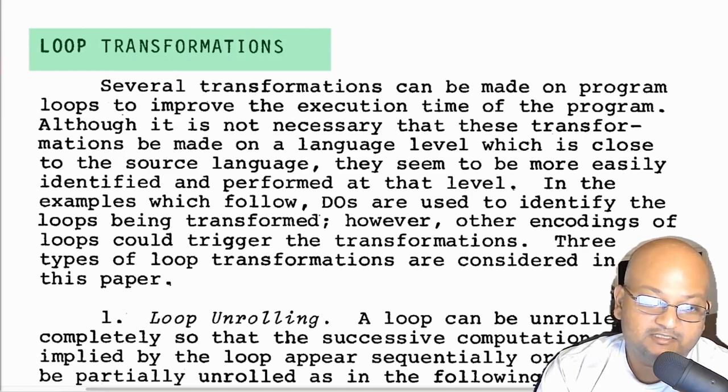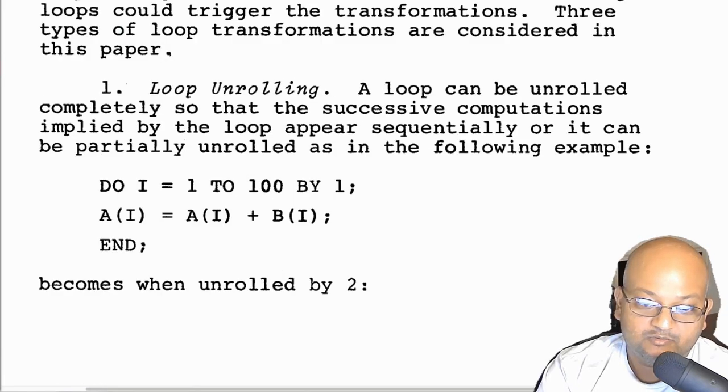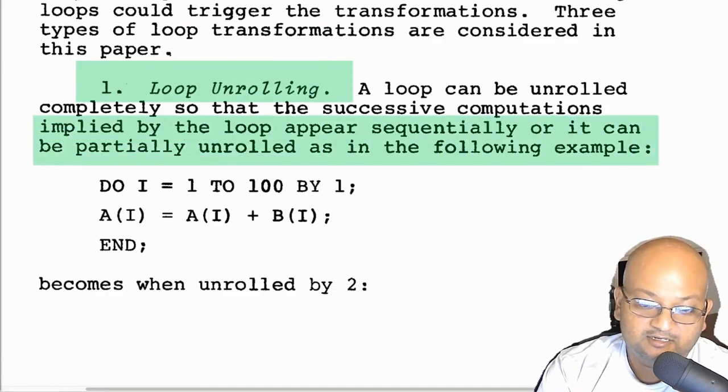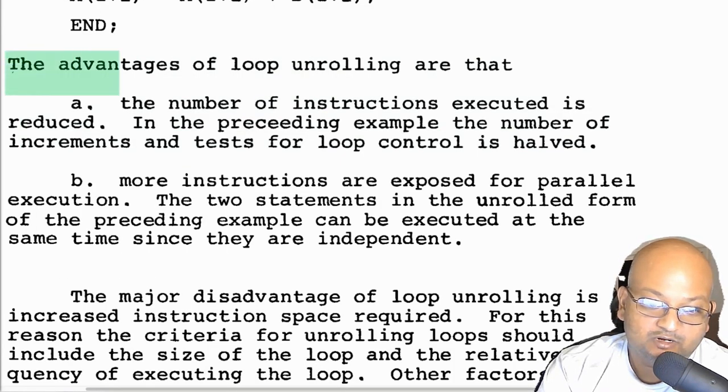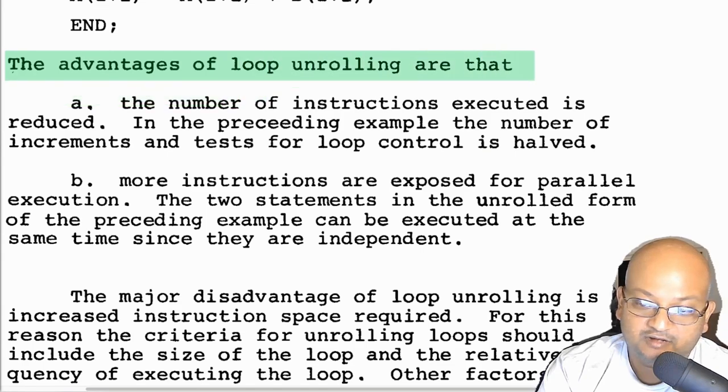The next category of optimizations are loop transformations. These are different ways in which you change the execution of loops to make them faster. One of the most common ones is loop unrolling. You could unroll a loop completely in that if you know the number of times the loop is being executed, you could expand that out into sequential code, or you could unroll it partially by doing more work in each iteration of the loop and then reducing the number of total iterations.